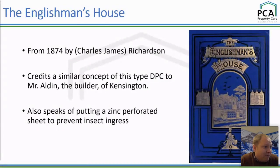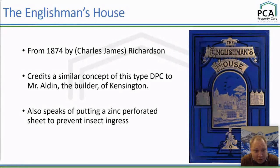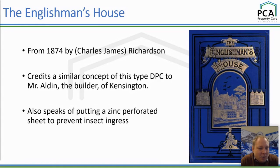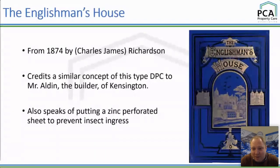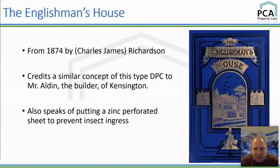The Englishman's House, written by Charles Richardson in 1874, also discusses this perforated brick type of damp proof course — crediting it to a Mr Olden of Kensington. Richardson also suggests putting a perforated sheet of zinc in front of the air vent to prevent insect ingress. That book is quite interesting in other respects too — it's from 1874 and talks about the use of Portland cement as a means of providing an impervious layer for decorative spoiling.